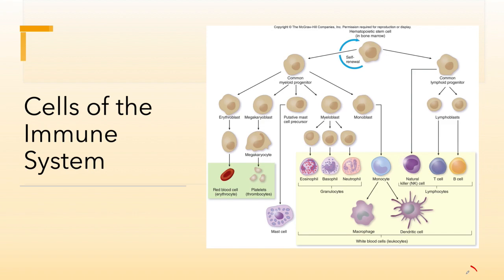When they differentiate into progenitors, they become one of two different types: a myeloid progenitor or a lymphoid progenitor. Myeloid progenitors are the cells we see most often in circulation, and lymphoid progenitors are those cells that reside in the lymph nodes until they are activated.